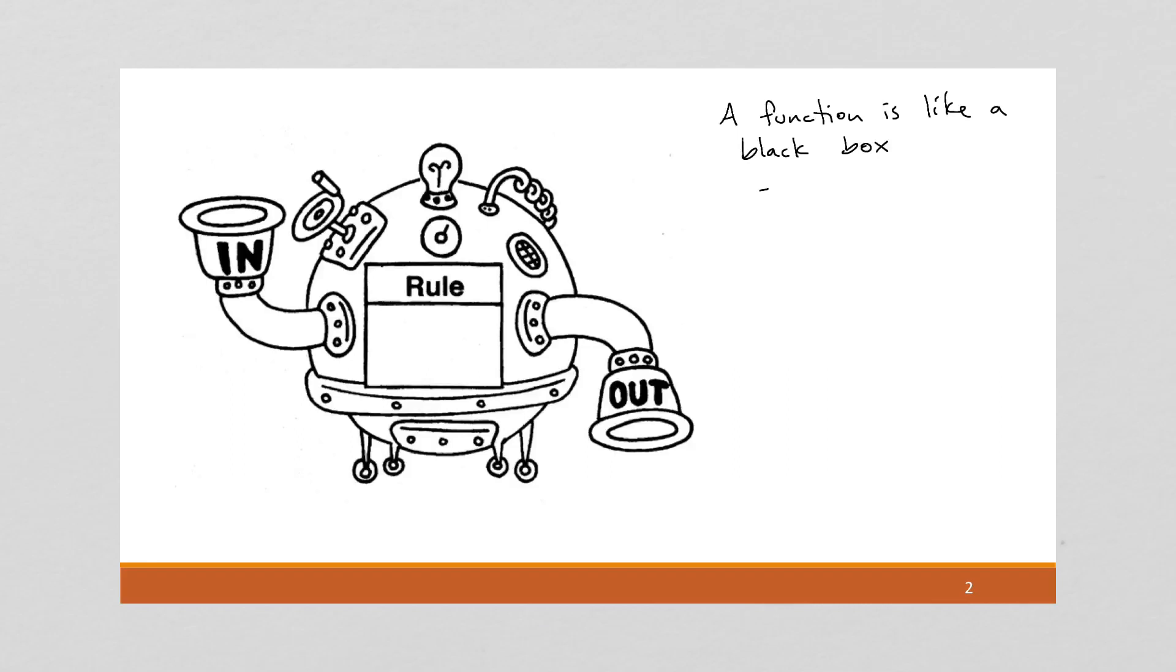So a function is like a black box. It takes inputs, one or more inputs, it processes them somehow, and then it outputs some kind of a response, right? And we're used to functions that take numbers. So in this function machine, a function always has a rule of some sort. So this one I'm going to have, this is the plus three rule.